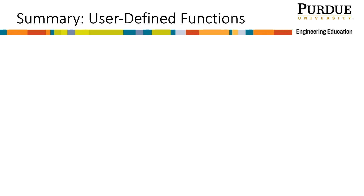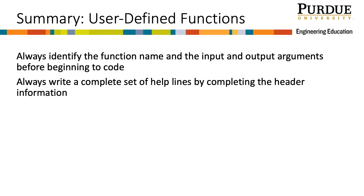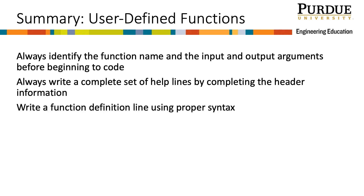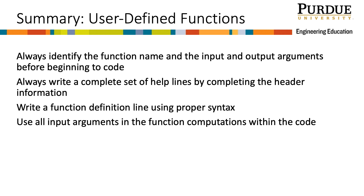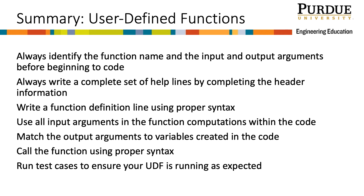In summary, when you develop user-defined functions: always identify the function name and input and output arguments before coding; write a complete set of help lines by completing the header information, useful for debugging and teaching new users; write a function definition line using proper syntax, as this first line defines everything else; use all input arguments in the function computations and ensure variable names match in both the function definition line and the code; match output arguments to variables created in the code; call the function using proper syntax since the order of inputs and outputs matters; and run test cases to ensure your UDF is running as expected.